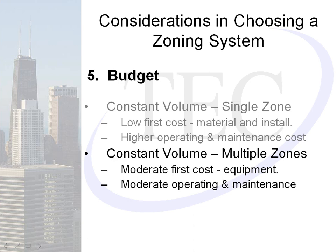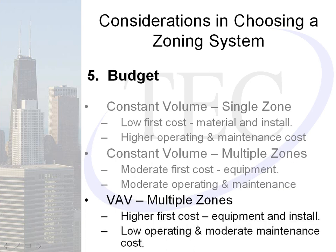For constant volume multiple zones, we see a moderate first cost on equipment and moderate operating and maintenance cost. Reducing the number of rooftops requires adding more zone controls, but zone controls typically don't require much maintenance. With fewer rooftops, there are fewer compressors and fans, so definitely less energy consumed. For VAV multiple zone, there is a higher first cost on equipment and installation, with lower operating cost and moderate maintenance cost.